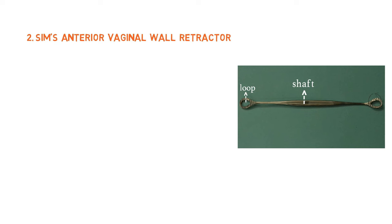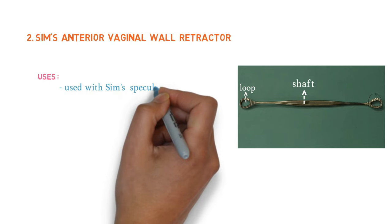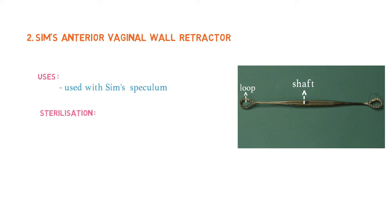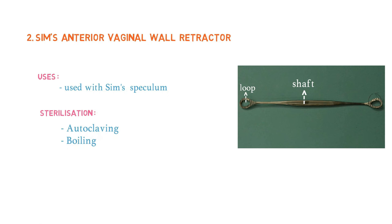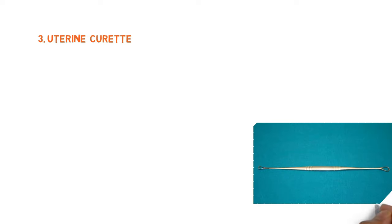The uses: as mentioned with the previous instrument, it is used together with the Sims speculum. The sterilization method used is autoclaving and boiling, just like the Sims speculum. Our next instrument is the uterine curette. Here we have the sharp end, the serrated handle, and on the opposite side we have the blunt end.